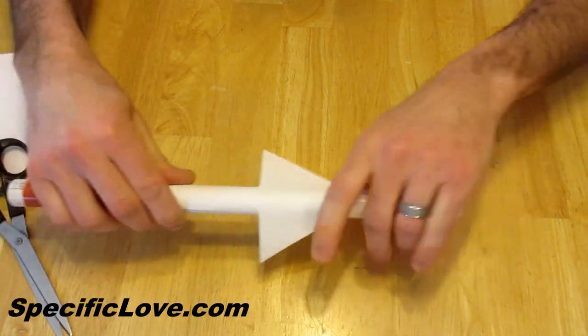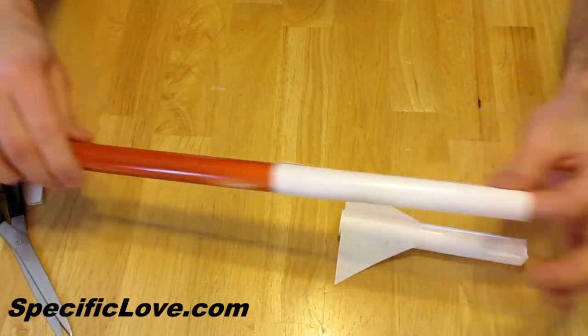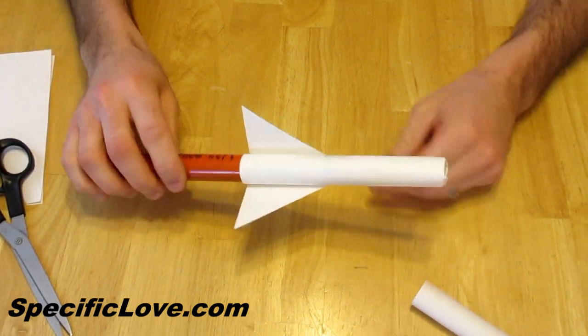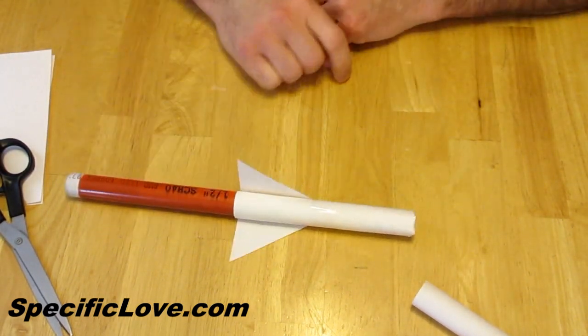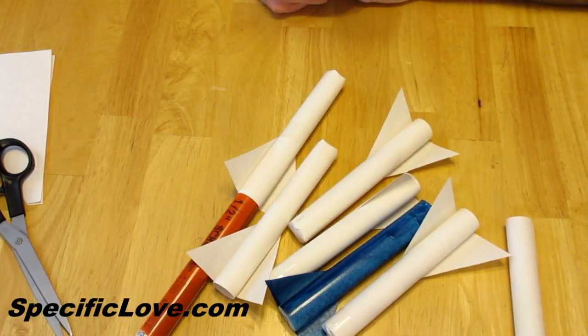What you do now is you pull the paper rocket off, take your inner layer that you created and you can discard it, put your rocket on and you're ready to go fire. We're going to have fun making these, as you can see, I've made a bunch, we're about to have some fun.